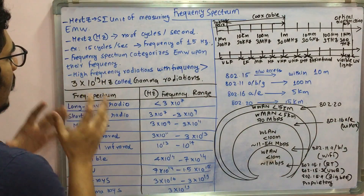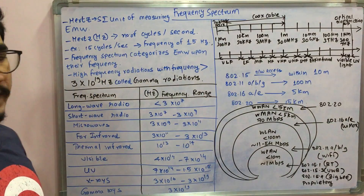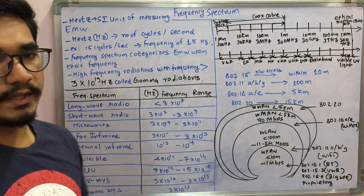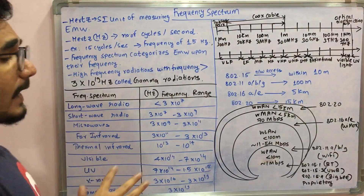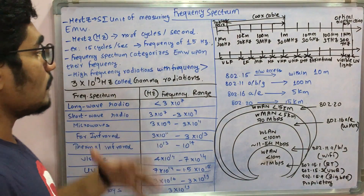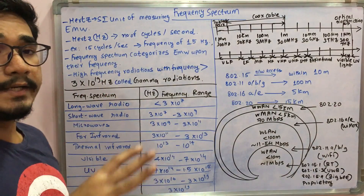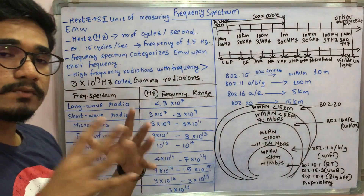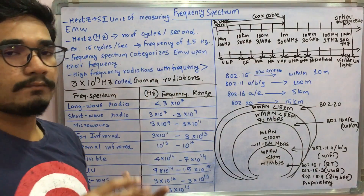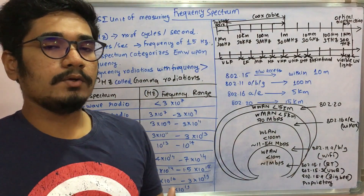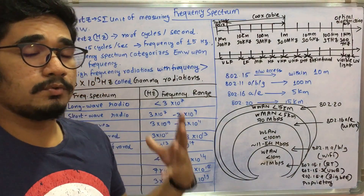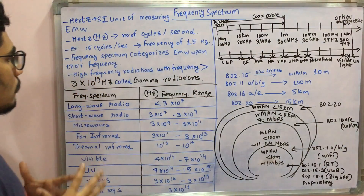We have high frequency, medium frequency, and low frequency radiations. Special care has to be given for high frequency radiations having a frequency greater than 3×10^19 hertz — these are called gamma radiations, and they are very harmful for human beings. You need to take special precautions if you are exposed to these kinds of radiations.